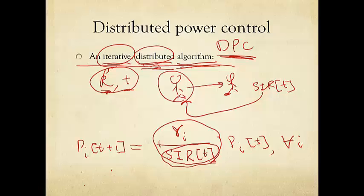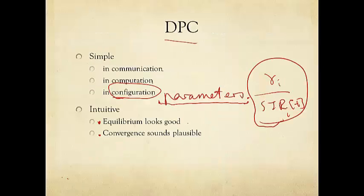In other words, there's certain time T beyond which no one's transmit power is moving anymore. Well, whenever that is the case, clearly that means that this ratio is one. That means everybody's SIR is exactly the target SIR. So the question is, will you ever get to equilibrium? Will you ever stop?